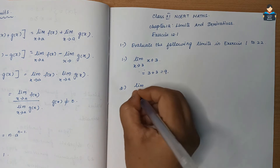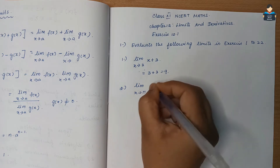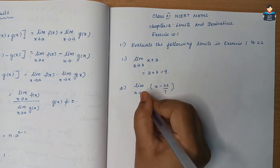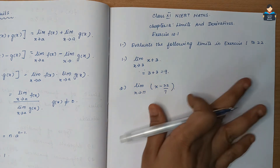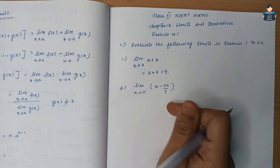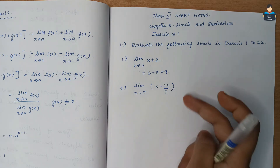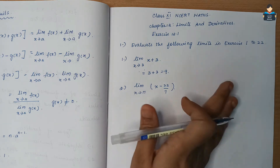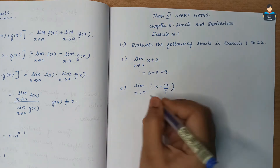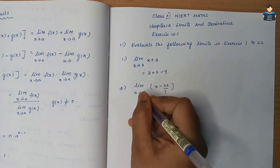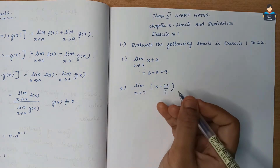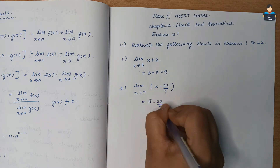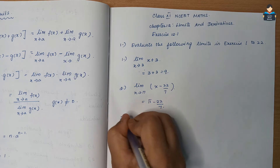Second sum: limit x tends to π of (x minus 22/7). This is a straightforward substitution. We substitute x = π, so the answer is π minus 22/7.